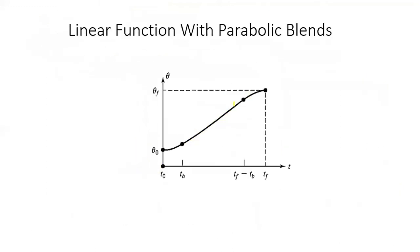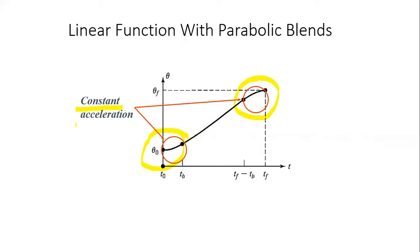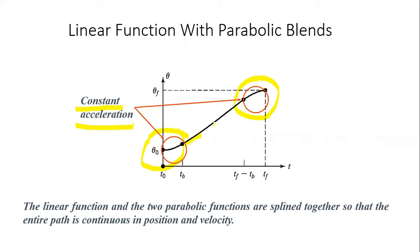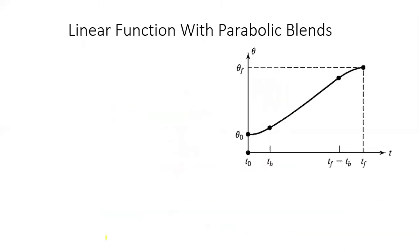To tackle this problem, we add a parabolic blend at the beginning and at the end. With the addition of these parabolic blends, we make the acceleration at the beginning and deceleration at the end a limited, defined value. For these two segments we get constant acceleration. The linear function from one point to the other and two parabolic functions are splined together so that the entire path is continuous in both position and velocity.